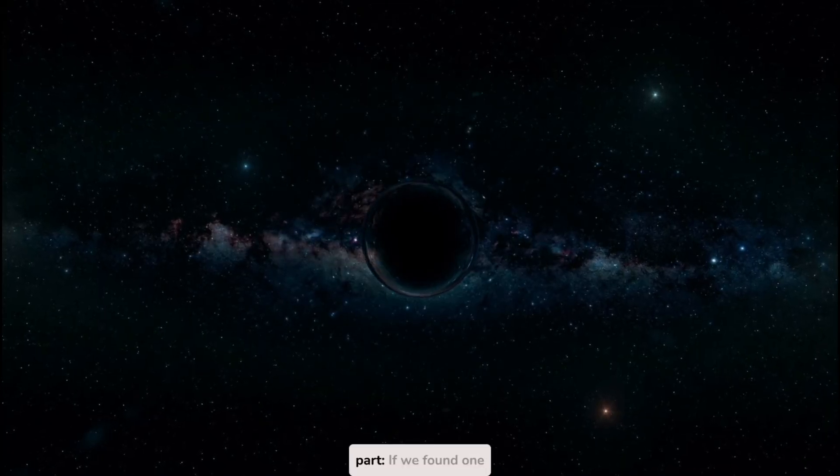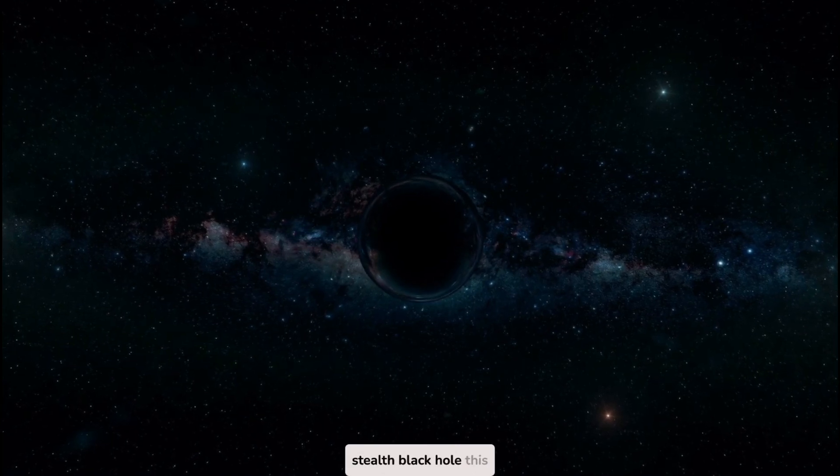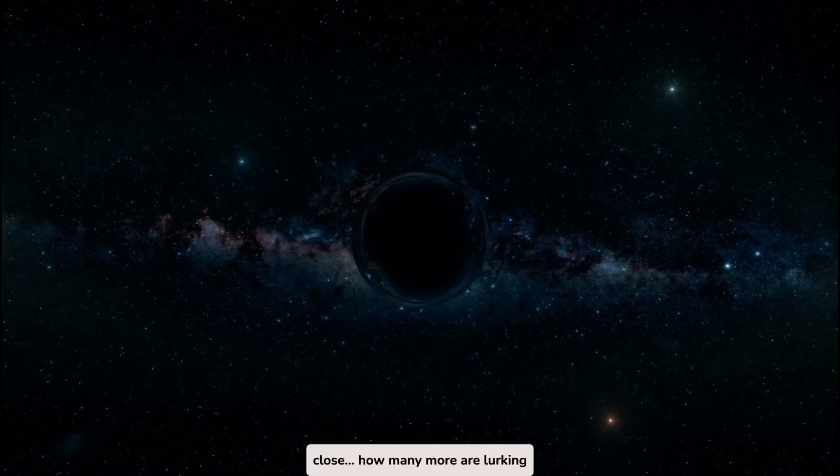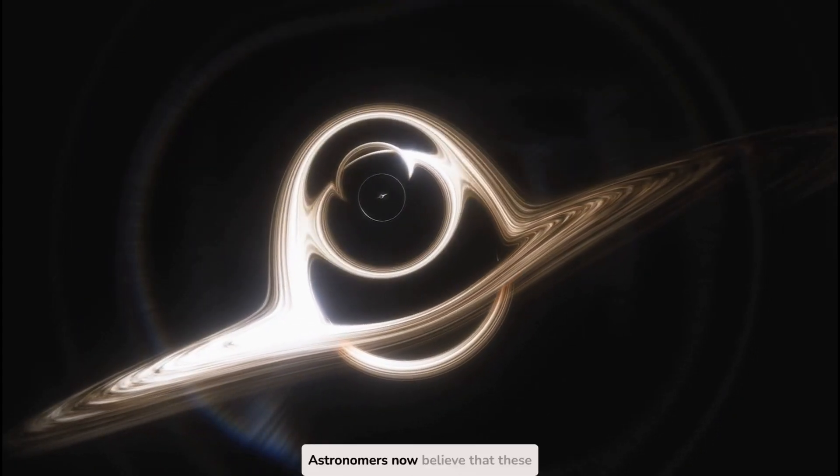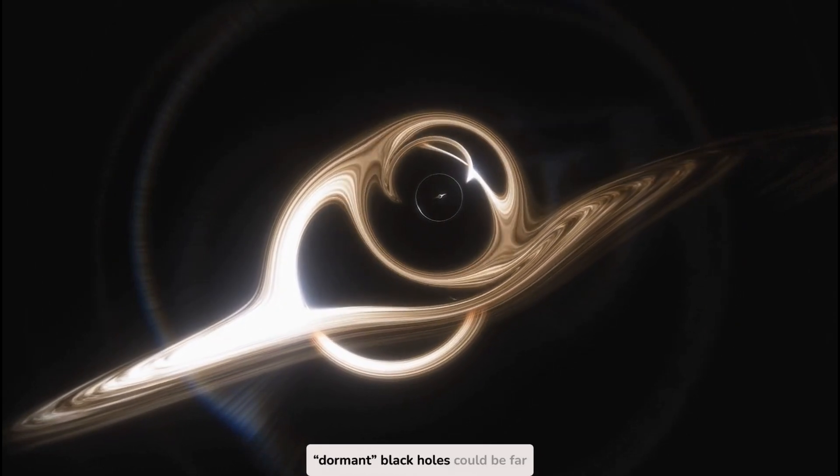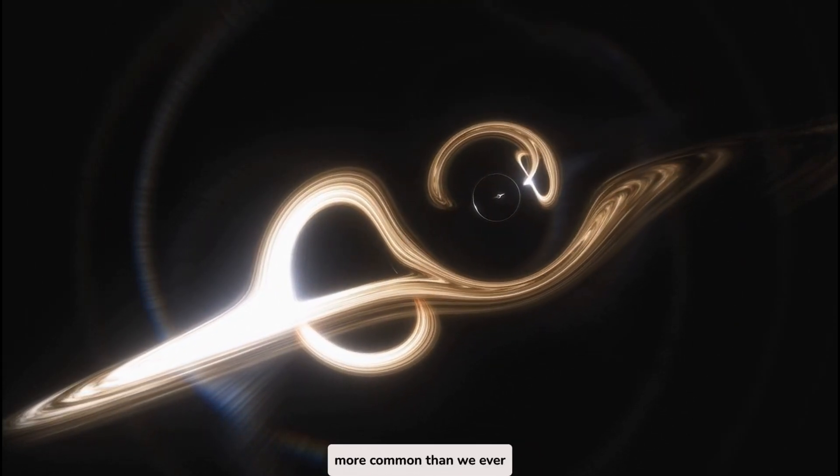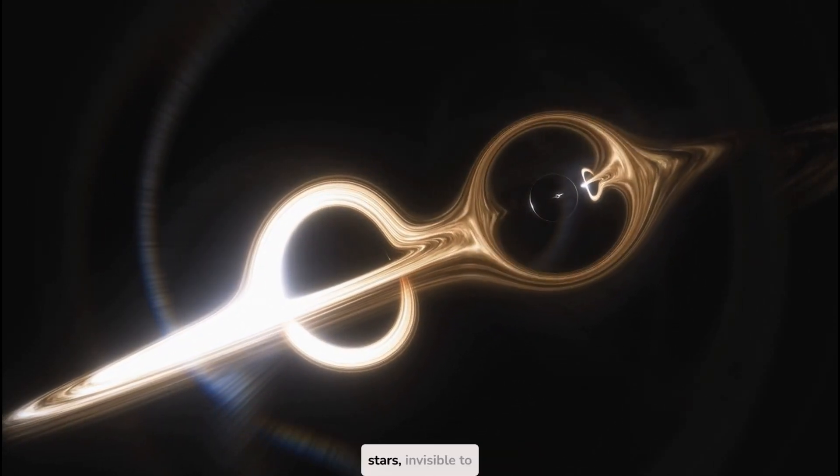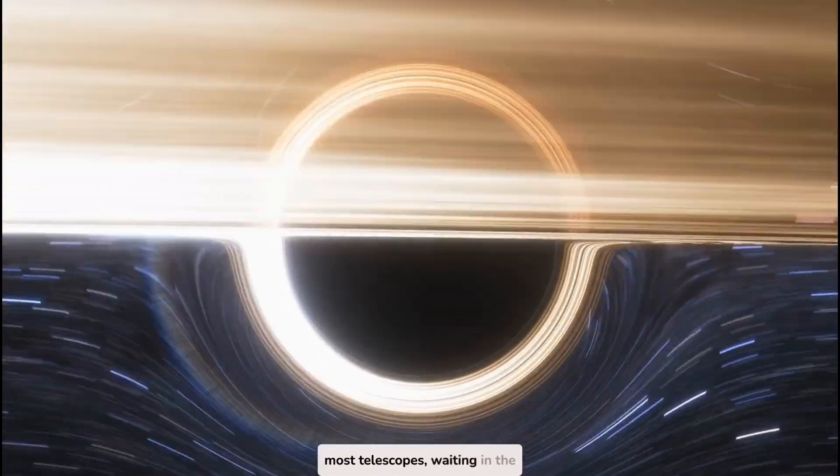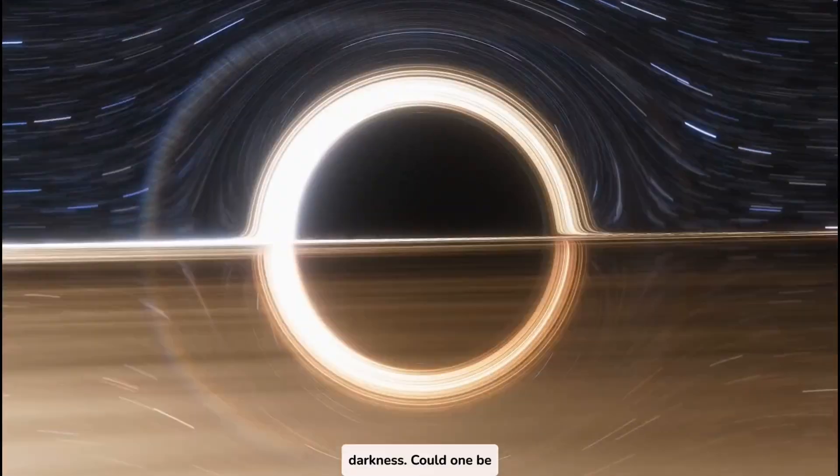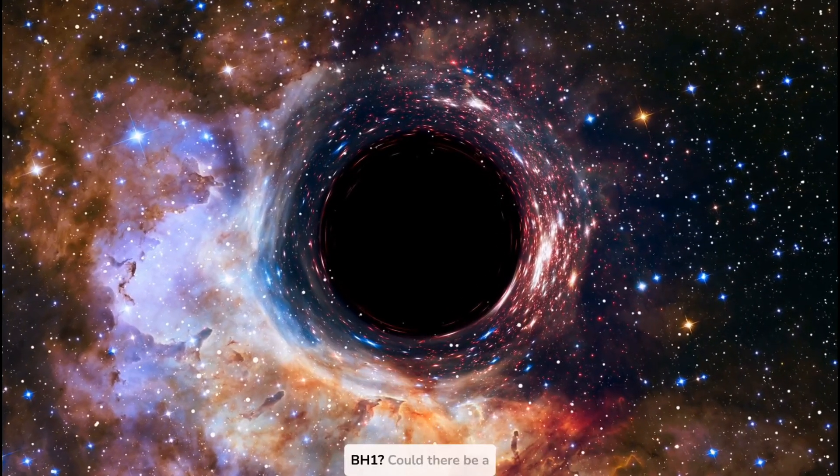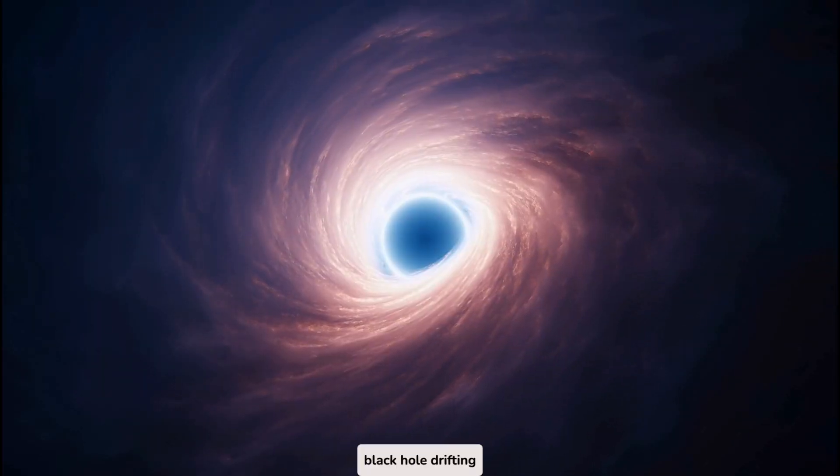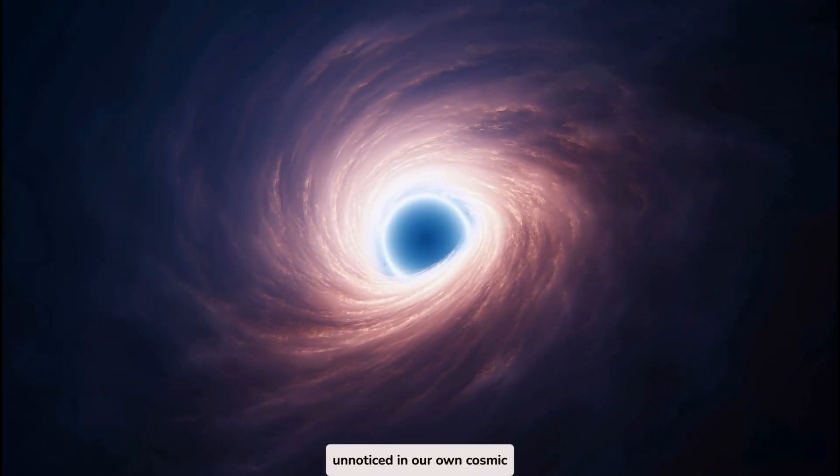Here's the truly terrifying part. If we found one stealth black hole this close, how many more are lurking nearby? Astronomers now believe that these dormant black holes could be far more common than we ever thought. Hidden among the stars, invisible to most telescopes, waiting in the darkness. Could one be even closer than Gaia BH1? Could there be a black hole drifting unnoticed in our own cosmic backyard?